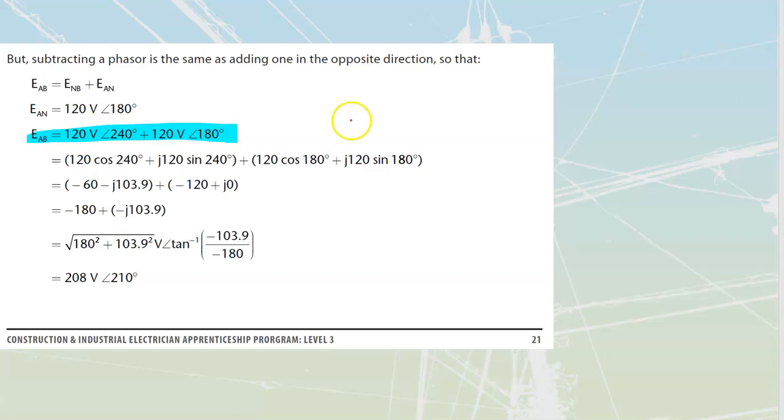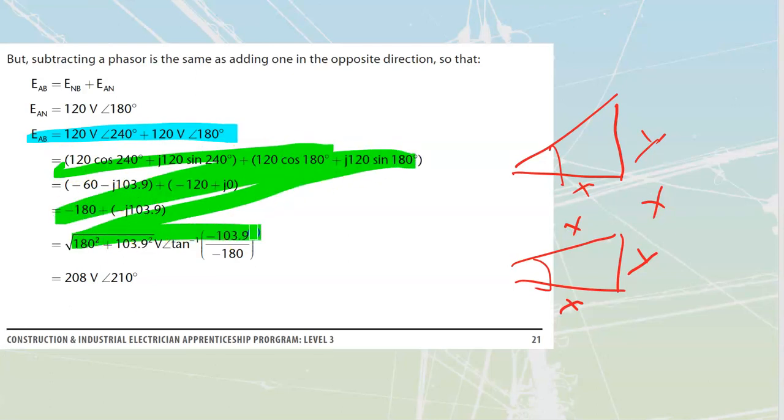Over here, what this person has decided to do is they've taken each of these angles, broken them down into triangles based on the angles and trigs, and they're going to find the X coordinates and the Y coordinates for each. Then they're going to add both of the Ys together, add both of the Xs together, and they do this entire thing just through a whole pile of trig.